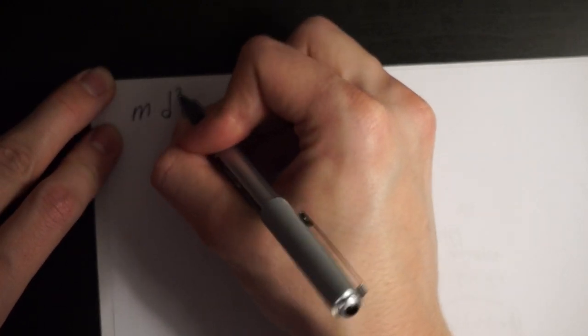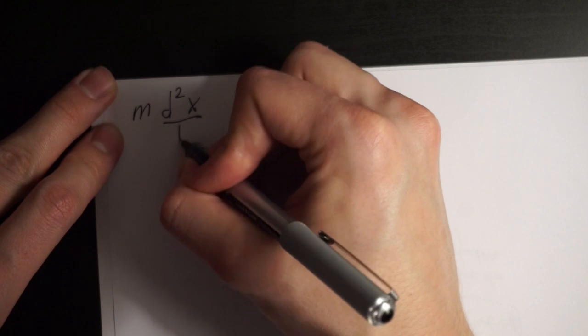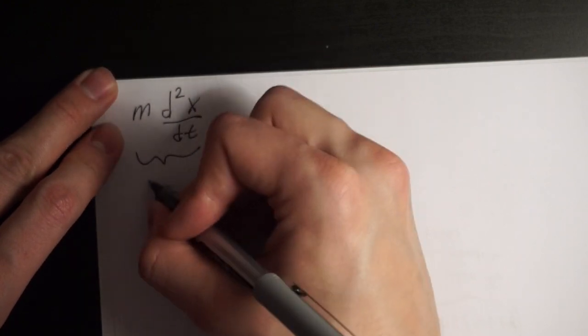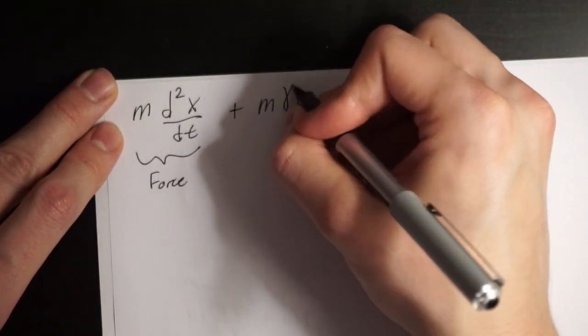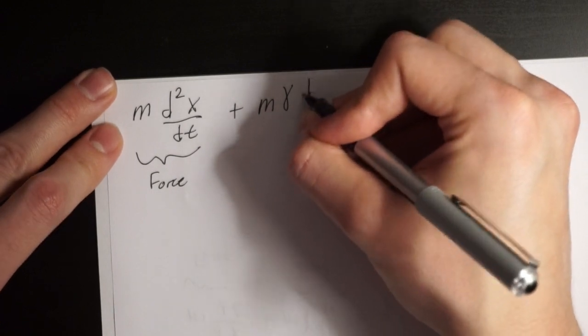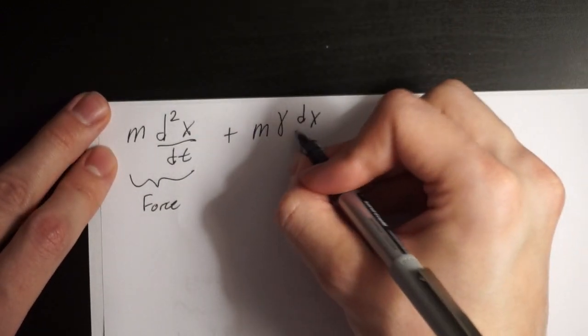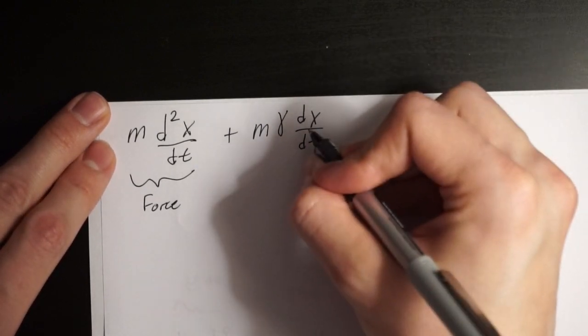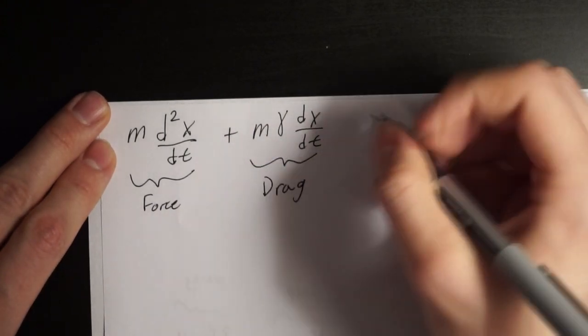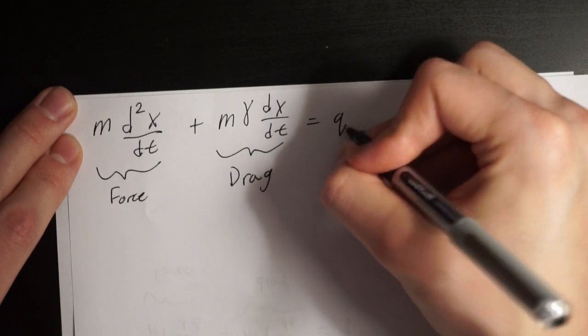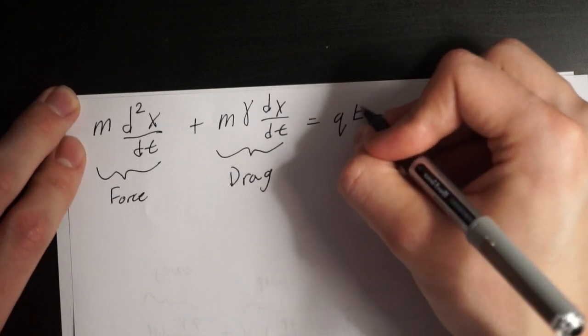The equations for that look something like this: mass times the second derivative of displacement, which is acceleration, is our force term; and we add mass times the dampening factor gamma multiplied by the first derivative of displacement, which is velocity — this is our drag term. This is all equal to the force on a single electron inside that electric field.